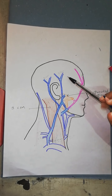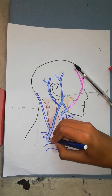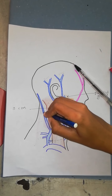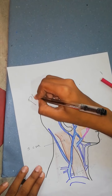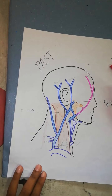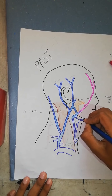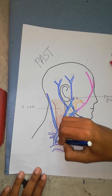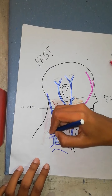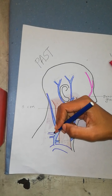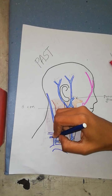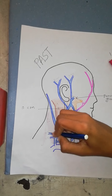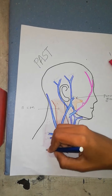The mnemonic to remember the tributaries of the external jugular vein is PAST. P is for the posterior external jugular vein. A is for the anterior jugular vein, which is the smallest of the three jugular veins. S is for the suprascapular vein, which comes from the back of the scapula. And T is for the transverse cervical vein, from the skin and fascia over the posterior triangle.